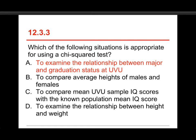B, where you're comparing the height, which is a quantitative variable for men and women, you would use the two sample t-tests there. To compare the UVU IQ scores to a known population mean, that would be a one-sample t-test or z-test. And then D, to examine the relationship between height and weight, you would usually use correlation or regression to do that.